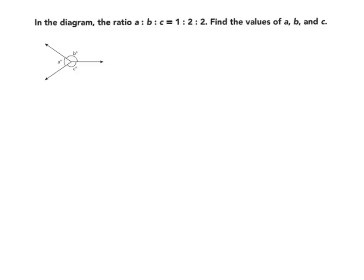First we need to decide what property we can use. I see that there are no straight lines, so I can't use the property of adjacent angles. However, I can use the property of angles at a point because all of these angles share a common vertex right here.